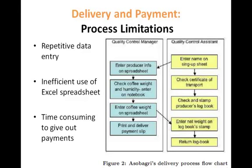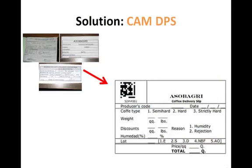There is repetitive data entry and information is handwritten several times. In the new approach, the barcode of the delivery receipt is captured using the mobile phone camera running CAM DPS. This prompts the user to enter each of the data fields from the receipt in sequence, accompanied by text and audio prompts for each field. The authors envision that once the delivery forms are completed, the Azobagri staff could be prompted to send the data via internet or SMS.